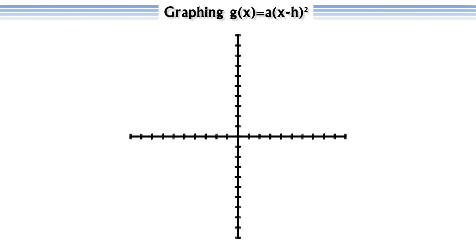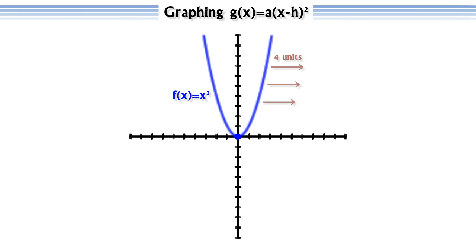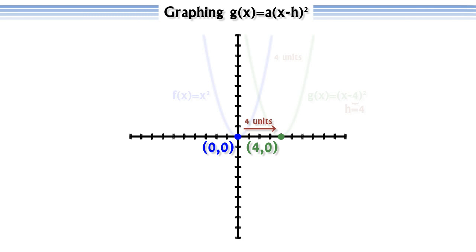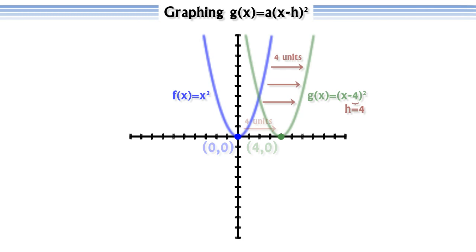What we want to do now is learn about shifting the graphs of our parabolas to the left or to the right and to identify qualities of quadratic functions with this concept in mind. In a quadratic function, if we replace x with (x - h), this will shift the parabola to the right h units. For example, if we wanted to shift f(x) = x² to the right 4 units, we would replace x with (x - 4). In this example, h equals 4. Notice that this shifted the vertex of the parabola from (0, 0) to (4, 0).